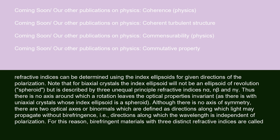The two refractive indices can be determined using the index ellipsoids for given directions of the polarization. Note that for biaxial crystals, the index ellipsoid will not be an ellipsoid of revolution — a spheroid — but is described by three unequal principal refractive indices n-alpha, n-beta, and n-gamma. Thus, there is no axis around which a rotation leaves the optical properties invariant, as there is with uniaxial crystals whose index ellipsoid is a spheroid. Although there is no axis of symmetry, there are two optical axes or binormals, defined as directions along which light may propagate without birefringence, i.e., directions along which the wavelength is independent of polarization.